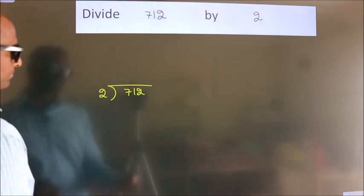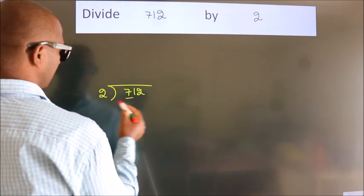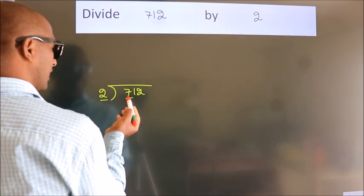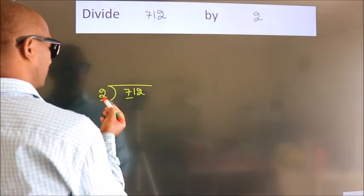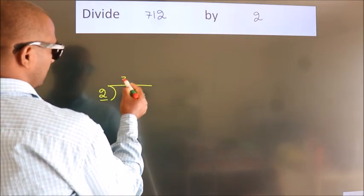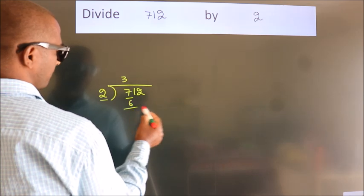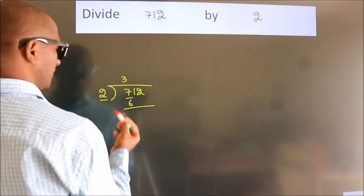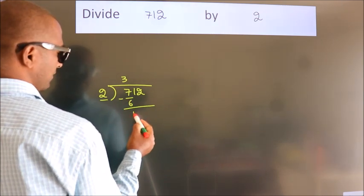Next. Here we have 7, here 2. A number close to 7 in 2 table is 2, 3 is 6. Now we should subtract, we get 1.